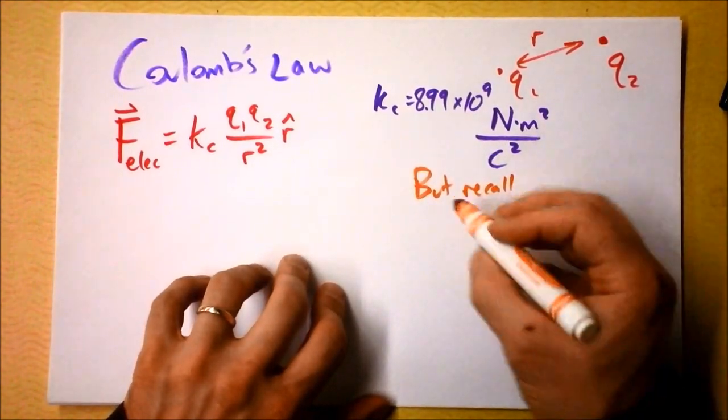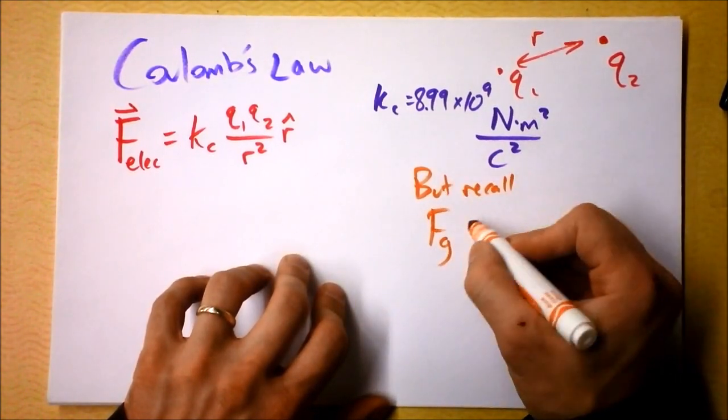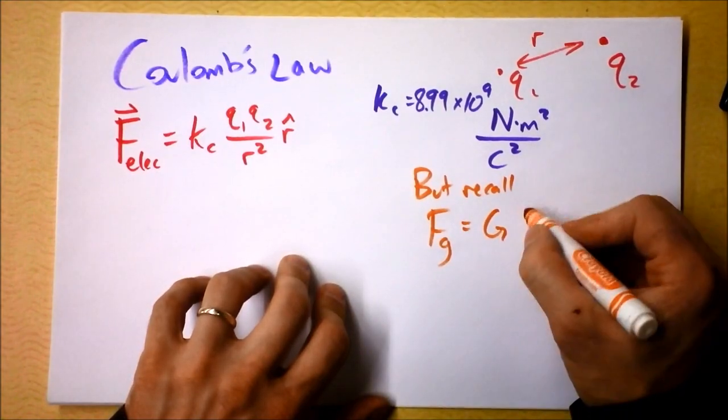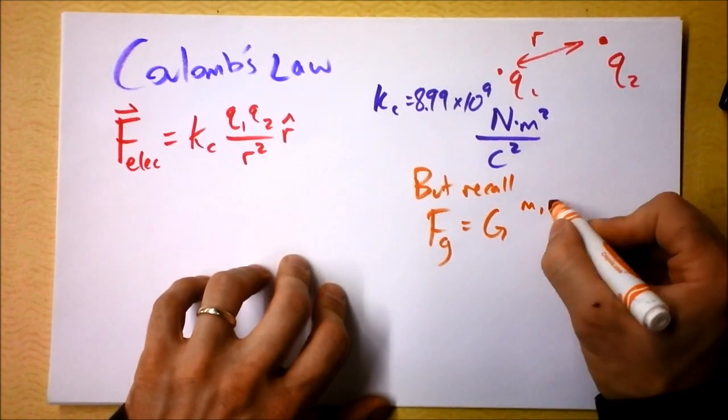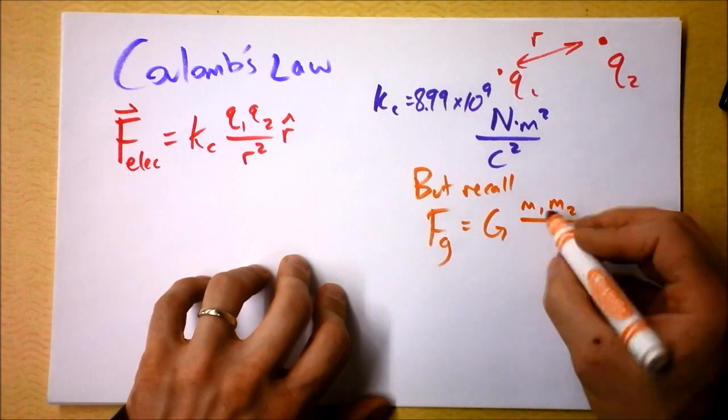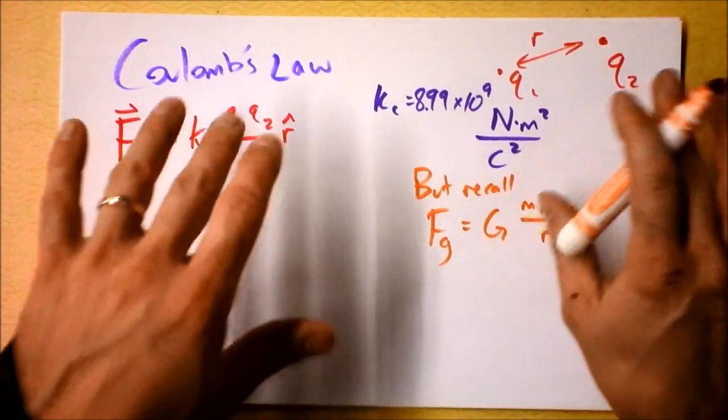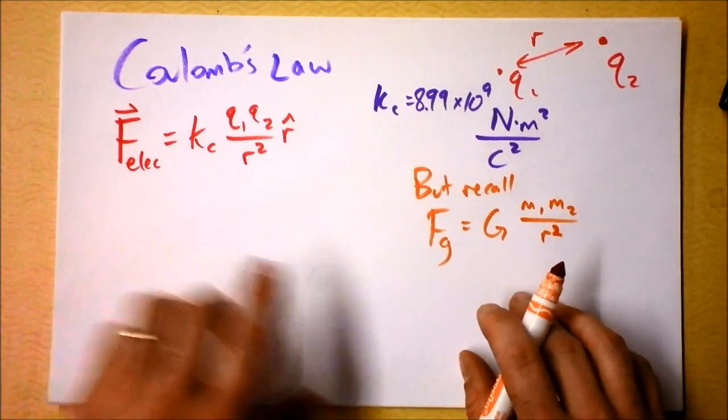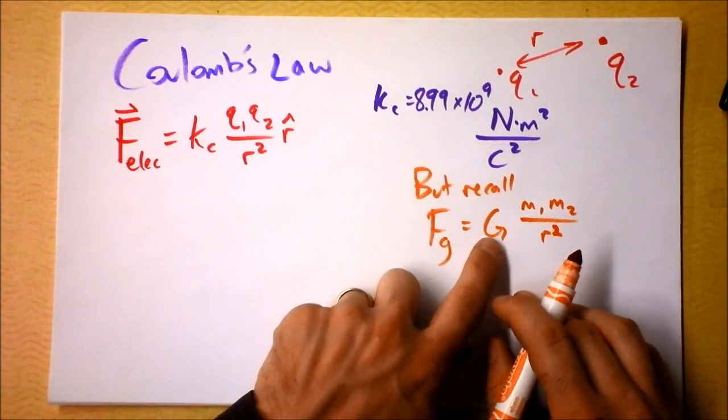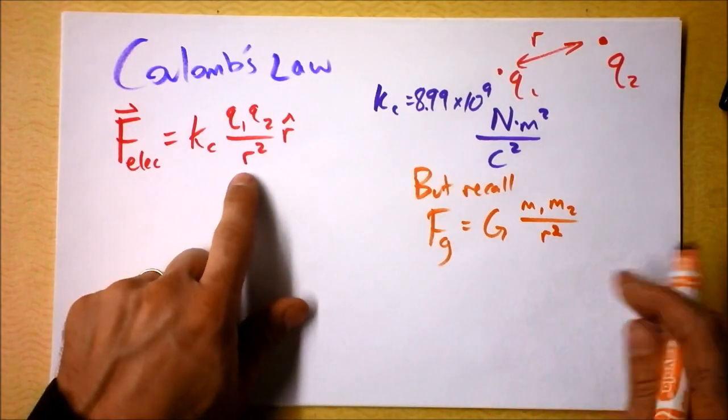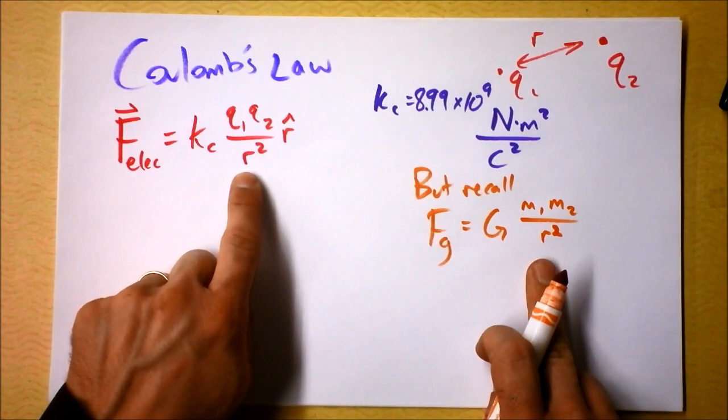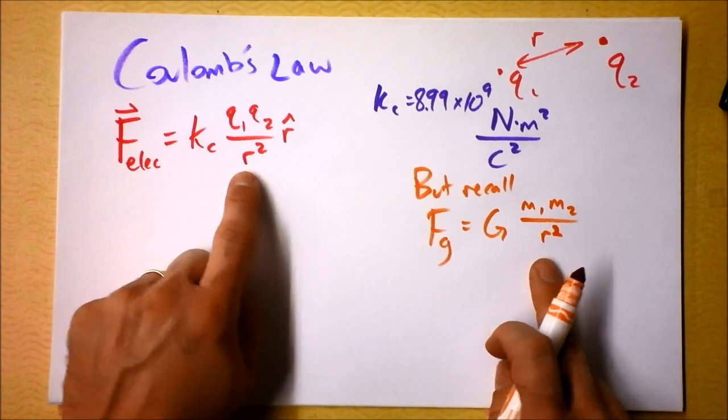Let us recall that gravitational force is capital G times the mass of thing one times the mass of thing two divided by how far apart they are squared. And I'm not particularly interested in the direction at this point. I think that will just cloud the issue. But remember that capital G, oh my gosh, look at the similarities between these two equations. This is appalling. Oh, nature. You are so beautiful.